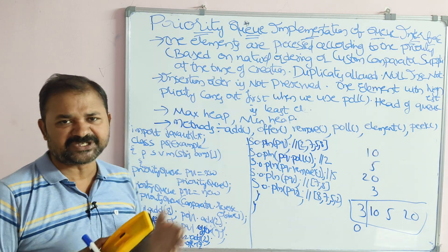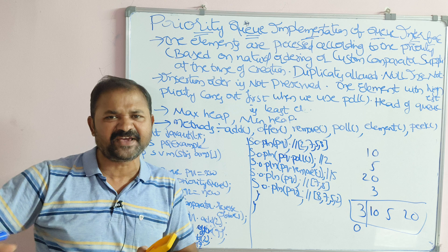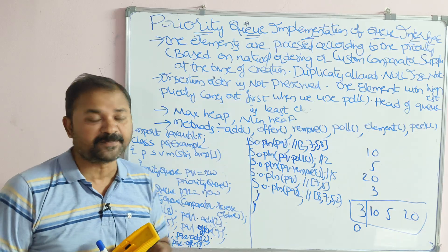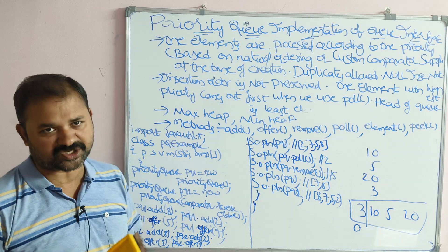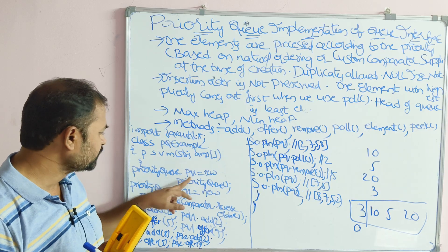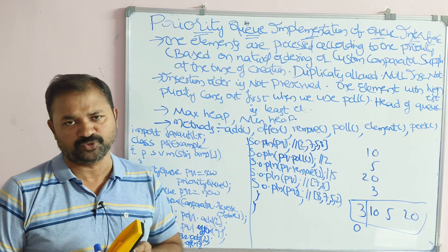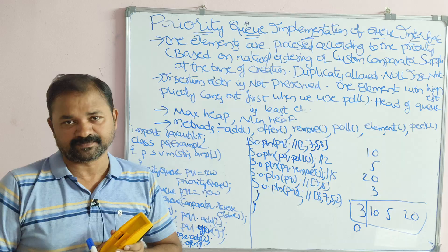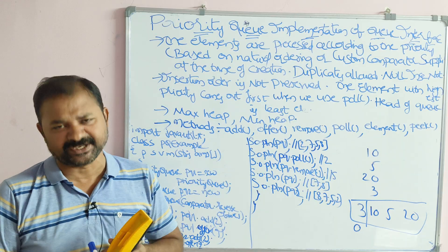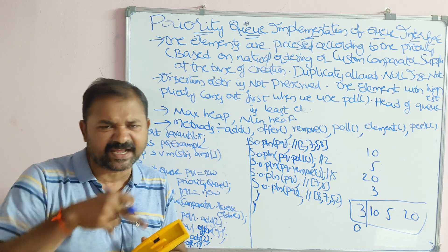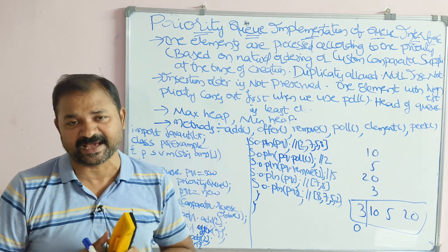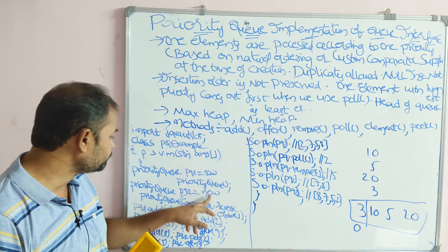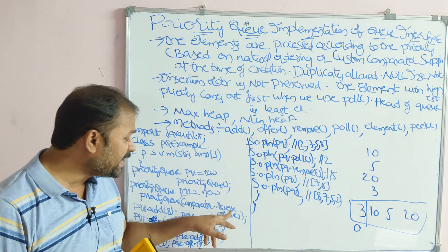We import the util package because every collection class, interface, and method is available there. The class name is PriorityQueueExample with public static void main. The first statement is: PriorityQueue pq1 = new PriorityQueue() — this is natural ordering, meaning the smallest element gets the highest priority. The second statement is: PriorityQueue pq2 = new PriorityQueue(Comparator.reverseOrder()) — this uses a custom comparator.